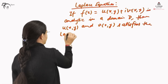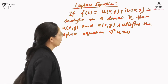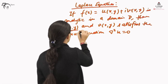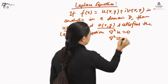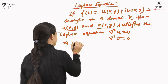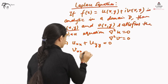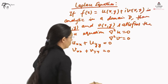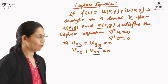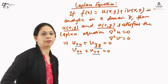The Laplace equation is ∇²U = 0. Since both parts satisfy the Laplace equation, it is written as ∇²U = 0 and ∇²V = 0, meaning U_xx + U_yy = 0 and V_xx + V_yy = 0, where the subscripts XX and YY stand for the second-order partial derivatives of U and V with respect to X and Y respectively.